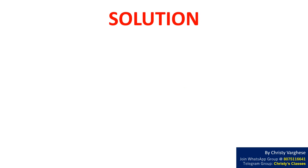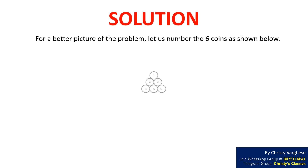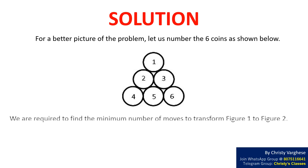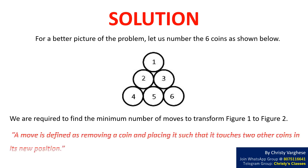Solution. For a better picture of the problem, let us number the six coins as shown below. We are required to find the minimum number of moves to transform figure 1 to figure 2. A move is defined as removing a coin and placing it such that it touches two other coins in its new position.